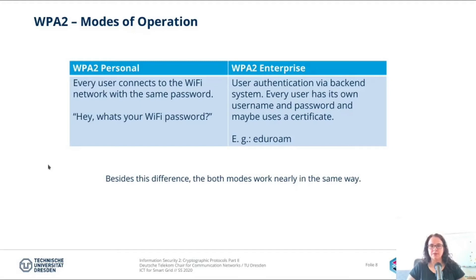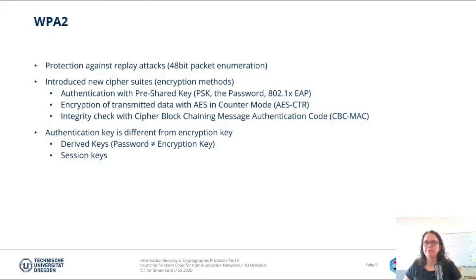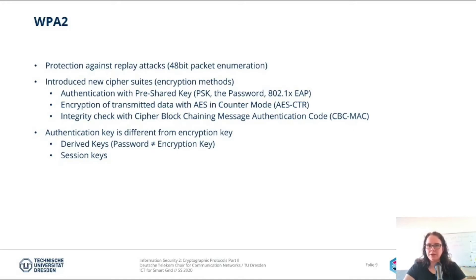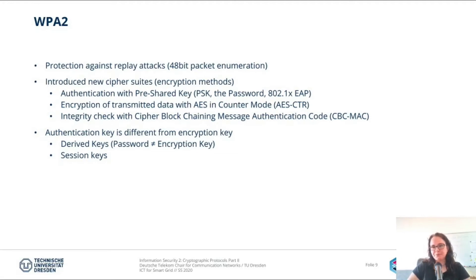Besides the difference in how to authenticate, both modes work nearly the same way. WPA2 provides protection against replay attacks with a 48-bit packet enumeration — every packet has its own number. It introduced cipher suites, which are encryption methods. The authentication in the network uses a pre-shared key, usually a password, and the encryption of transmitted data is done with AES in counter mode. The integrity check of every packet is done with cipher block chaining message authentication code, short CBC-MAC. The authentication key is different from the encryption key — you type in your password for authentication, but an encryption key is derived from it and used for the session.